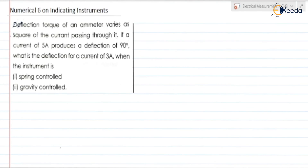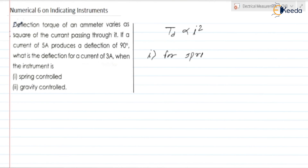Numerical 6: the deflection torque of an ammeter varies as the square of the current (Td ∝ I²). If a current of 5 ampere produces a deflection of 90°, what is the deflection for a current of 3 ampere when the instrument uses (a) spring control and (b) gravity control? For spring control: Tc = Kθ, so Tc ∝ θ. At equilibrium Td = Tc, so I² ∝ θ.